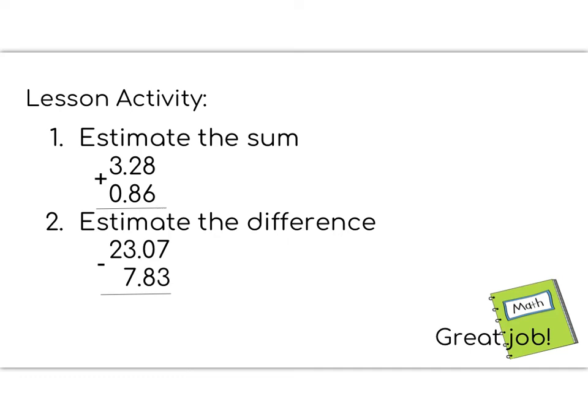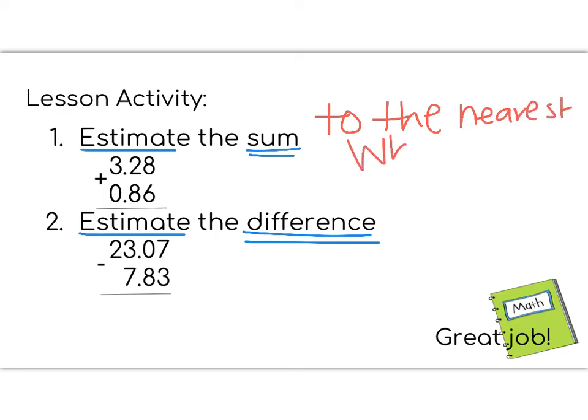All right, fifth graders, time for your lesson activity. Your lesson activity today has two parts. In the two parts you are going to estimate the sum, that means add, and then estimate the difference. In order to do these, you are going to round to the nearest whole. So that means no decimal number. These two problems should be done in your math notebook. Great job, fifth graders. Thank you.